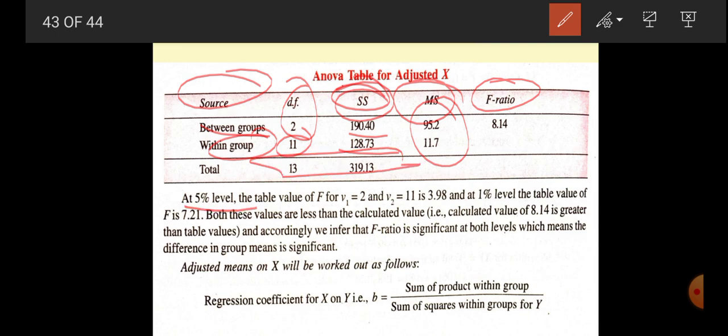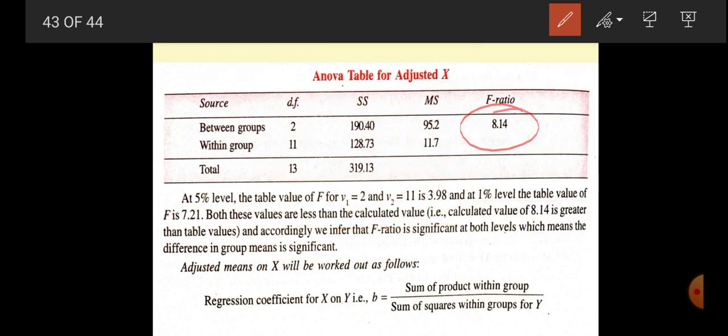At 5% level, V1 is 2 and V2 is 11, so it is 3.98. From the table at 5% level, we are getting 3.98, and at 1% level it is 7.21. Both these values are less than the calculated value. The calculated value is 8.15, and both the table values are less. So calculated value 8.1 is greater than the table value. Accordingly, we refer to the F ratio as significant at both levels, which means that the difference in group means is significant.